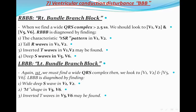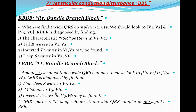In left bundle branch block, we again must have a wide QRS complex. The RSR pattern or M-shape seen in left bundle branch block, without a wide QRS complex, does not mean the patient has bundle branch block. So we must first have a wide QRS complex — an indication of prolonged conduction time inside the ventricles. Then we look to V1 and V2 on one hand, and V5 and V6 on the other. In left bundle branch block, we will find a wide deep S wave in V1 and V2, an M-shape in V5 and V6, and inverted T waves in V5 and V6 may also be found.